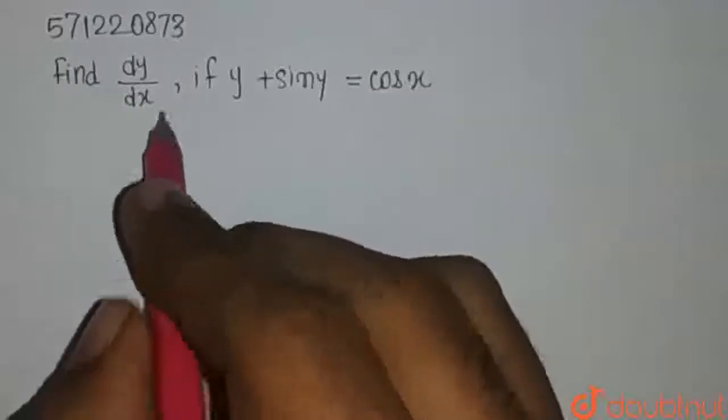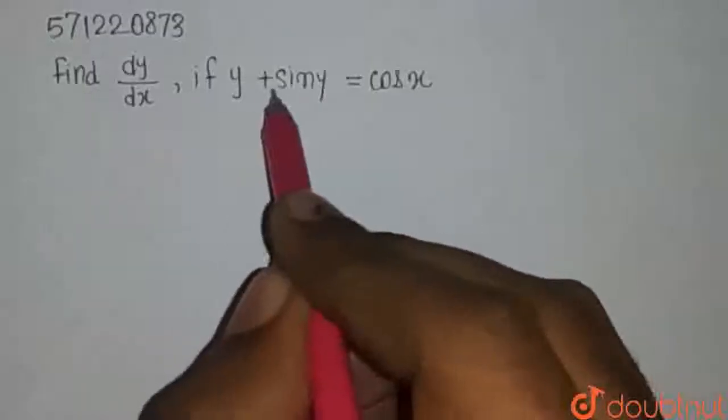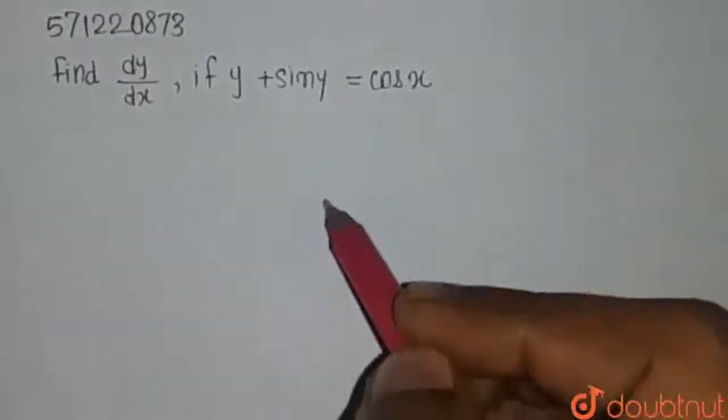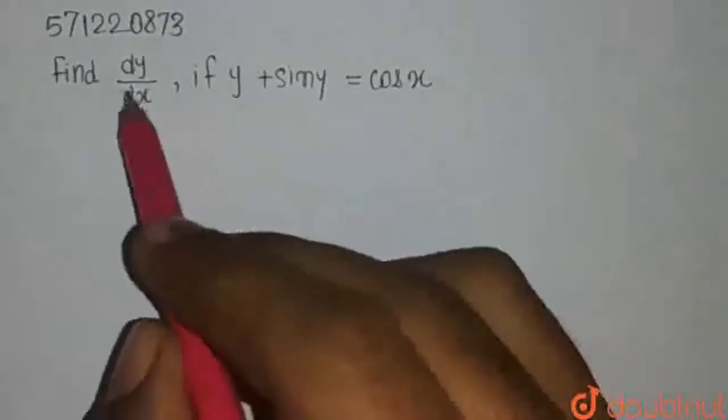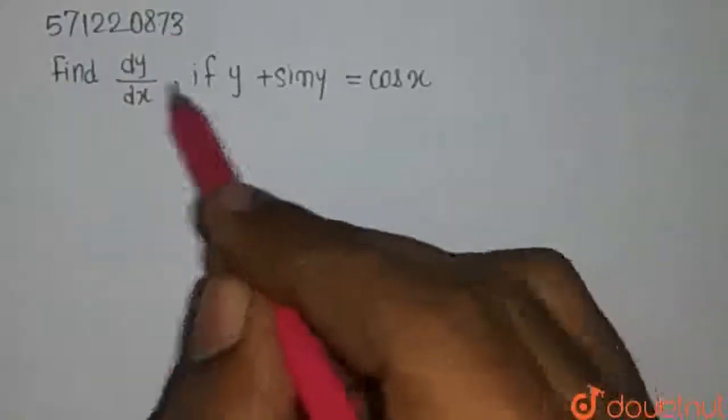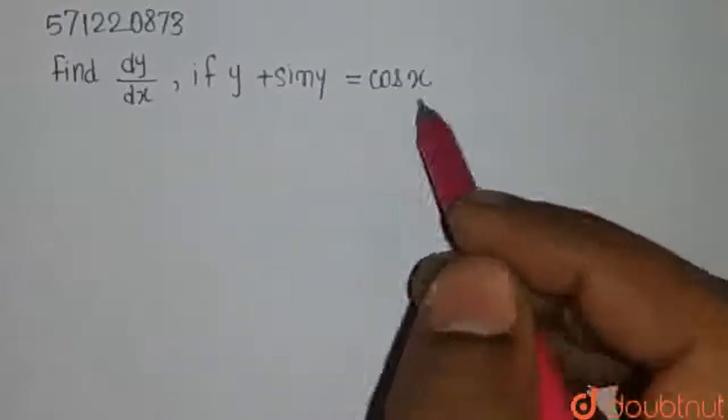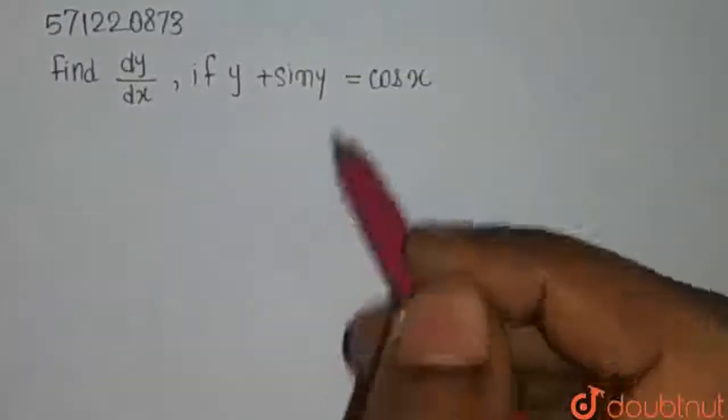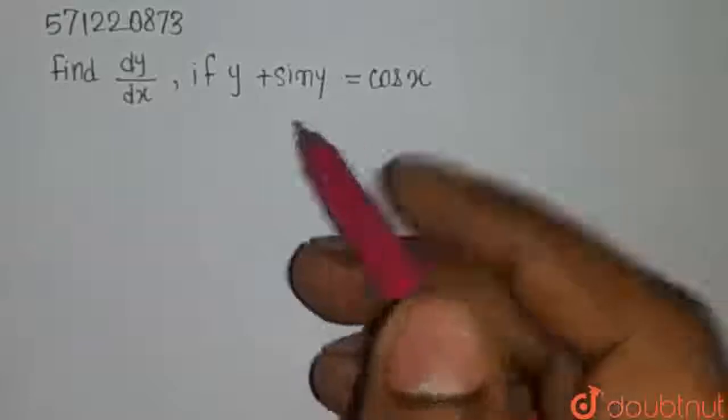Hello, the question is find dy by dx if y plus sin y equals cos x. So we need to find the dy by dx. To find dy by dx, we need to differentiate this function with respect to x, whole equation with respect to x.